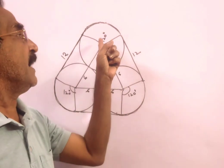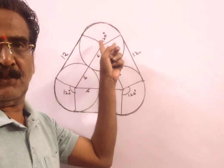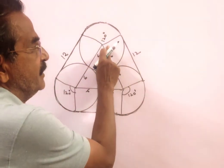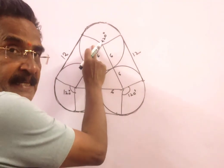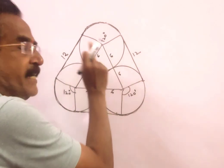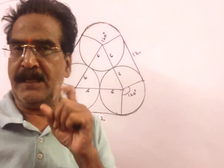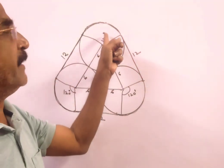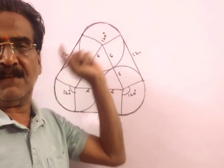Friends, here the angle, angle at the center is 120 degrees. See friends, this is 90, this is 90, this is 60. 90 plus 90 plus 60, 180 plus 60, 240. So 360 minus 240. This angle is 120.